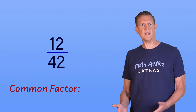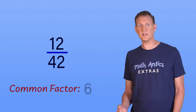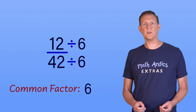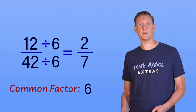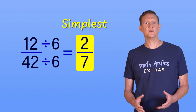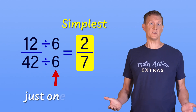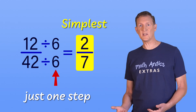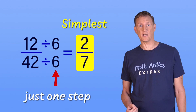But what if right at the beginning of the problem, you knew that the greatest common factor these numbers shared was 6? Then, if you simplified by dividing both the top and the bottom of the fraction by 6, you'd get the result 2 over 7. And 2 over 7 is the simplest form this fraction can take. So knowing the greatest common factor can help you simplify a fraction in basically just one step. Of course, if it takes a lot more steps to figure out what the greatest common factor is, it might not save you as much time as you'd like.